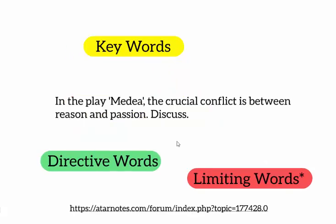Have another go. What are the keywords, the limiting words, and the directing words? Hopefully you've got 'reason' and 'passion' as your keywords — these are the two themes sitting side by side. The directive word is 'discuss,' wanting you to explore all the different perspectives. And then we have the limiting word: 'crucial conflict.' This was actually a VCE exam question from last year, and a lot of students forgot that part — they talked about reason versus passion but forgot about the 'crucial conflict' aspect of the question.